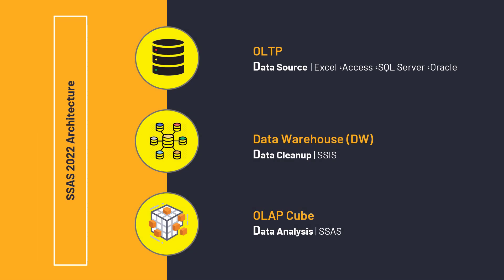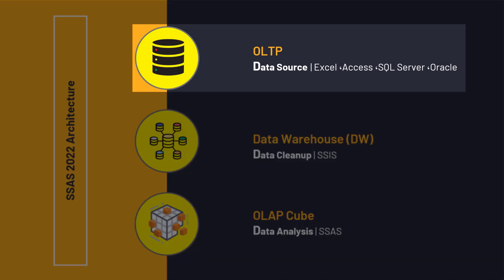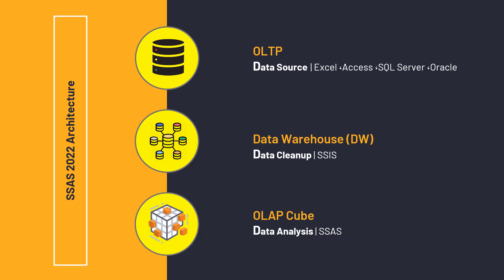As you saw in the previous figure, there's a series of data we're going to conduct some analysis on in the beginning. This part is called the data source, or OLTP. These data might be in various formats, such as Excel, Access, SQL Server, Oracle, and so on, and may be scattered.